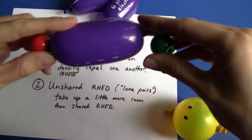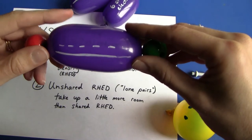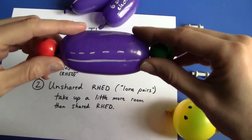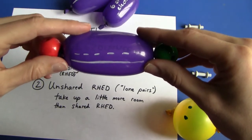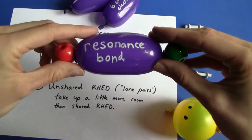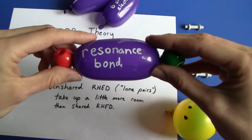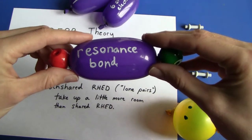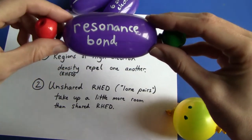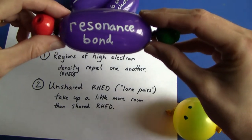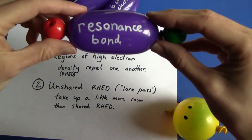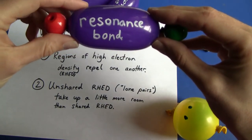A resonance bond is when we have a non-integer bond order due to resonance structures — so we don't have a single bond or a double bond, but a resonance bond. That's still just a single region of shared high electron density.